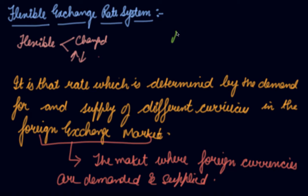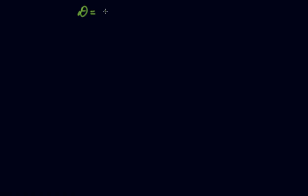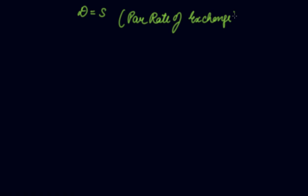So your exchange rate is a function of demand and supply of the foreign currencies. When the demand of foreign currency is equal to the supply of foreign currency, it constitutes the normal rate or equilibrium rate — the rate we get will be the equilibrium rate.